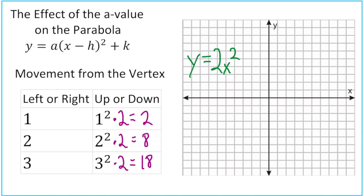By the time we go over three on this graph, we're going to be off the graph. So we still have zero, zero as our starting point. Now we go over one, up two, both left and right. Going back to the vertex, when we go over two, we go up eight spaces, because that is two squared times the a value of two. We don't have space to go over three and up 18. That is what happens to the graph when you have an a value of two.